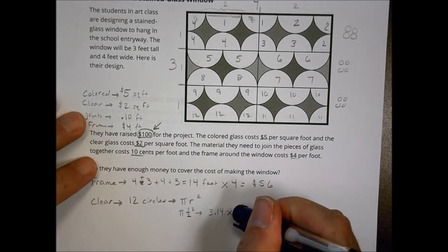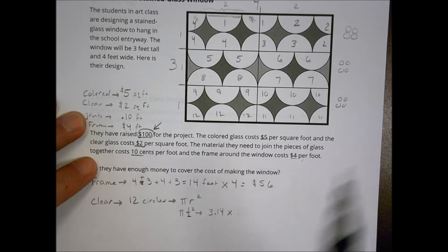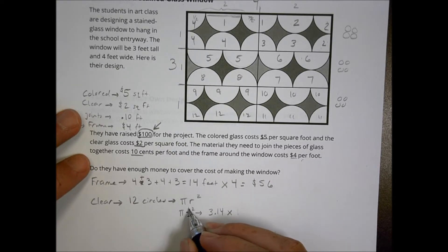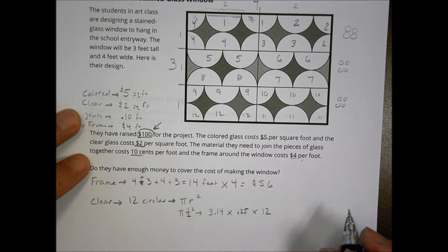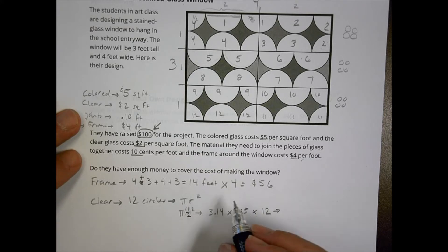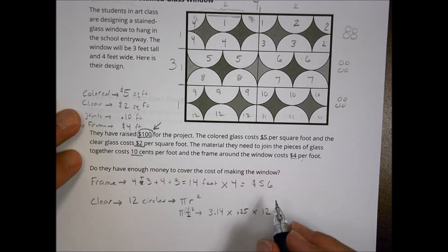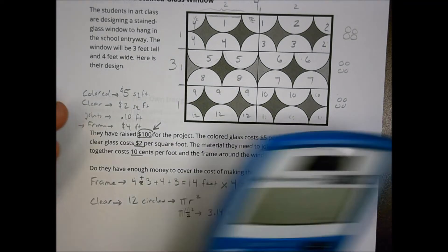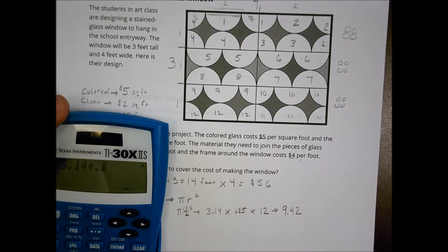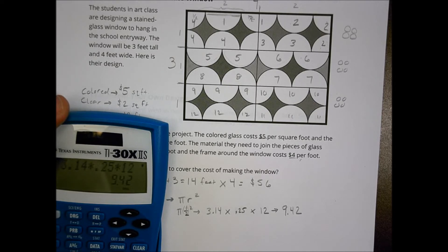So I'm going to do 3.14, sorry, times, and this is a half squared is one fourth. One fourth is also 0.25. And then we'll multiply that by twelve altogether. Okay? So sorry about that. We're going to do a half because that's my radius. And then squared, which is 0.25. So 3.14 times 0.25 times 12 is going to equal 9.42. Okay? So let's just double check my math here real quick. 3.14 times 0.25 times 12 equals 9.42.